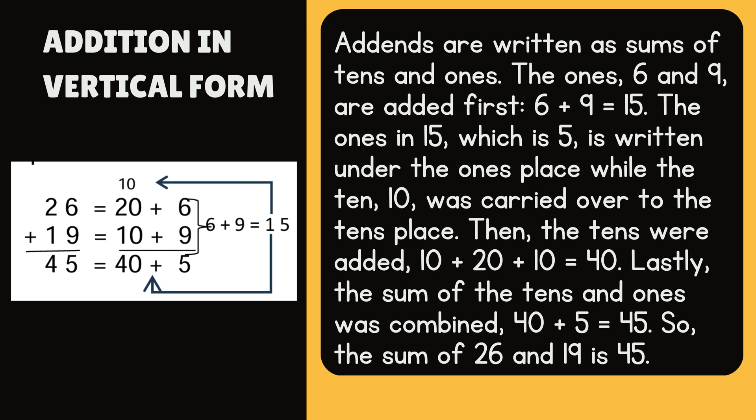The ones in 15, which is 5, is written under the ones place, while the 1 ten was carried over to the tens place. Then the tens were added: 10 plus 20 plus 10 equals 40. Lastly, the sum of the tens and ones was combined: 40 plus 5 equals 45. So the sum of 26 and 19 is 45.